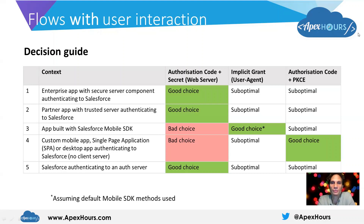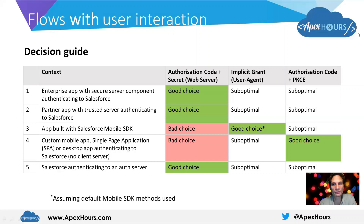The authorization code with secret flow for this scenario wouldn't be a good choice, because an app built on the Mobile SDK would typically be distributed across many devices, and so we can't guarantee that any secret held in that app would be secured effectively.